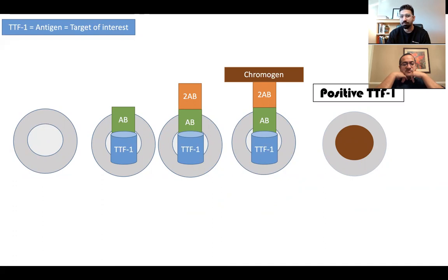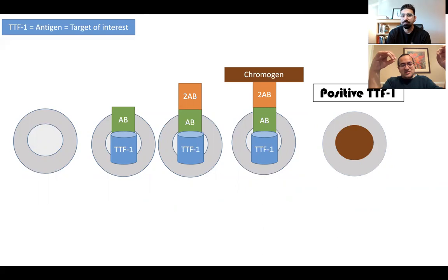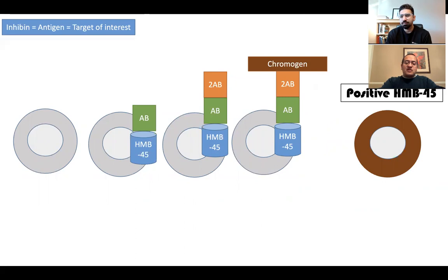We call things like these nuclear markers - where the antigen is only in the nucleus, so the antibody only marks the nucleus and the color only shows up in the nucleus. Similarly, we have things like HMB45, which is a marker of melanomas, where the antigen is in the cytoplasm, so only the cytoplasm turns brown. So you have membrane antigens, cytoplasmic antigens, and nuclear antigens. Pretty straightforward.